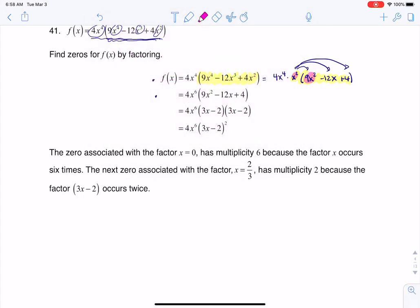X squared times 9x squared, yep, that is 9x to the fourth. And x squared times negative 12x, yes that is negative 12x cubed. And finally x squared times positive 4 is positive 4x squared. So now let me just undo some of that highlighting now that I've checked my multiplication. And then let me get rid of my little distributing arrows.